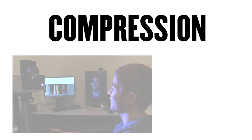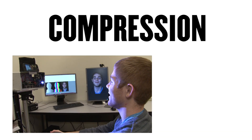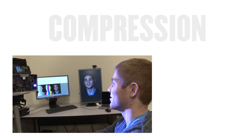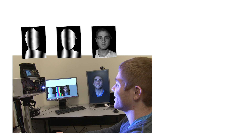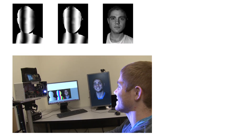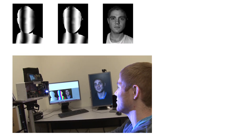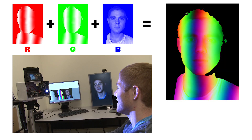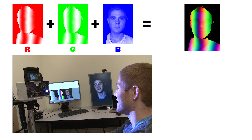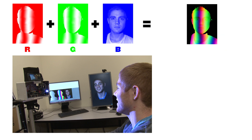A holographic image can be captured by any 3D camera, and that information is then separated by algorithm into three distinct data sets, stored in the R, G, and B channels of a standard 2D image. That 2D image is then compressed at a data rate of your choosing.